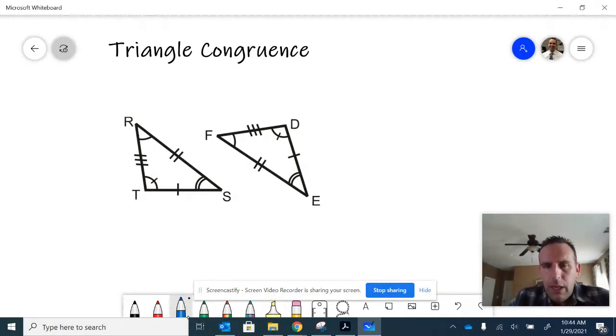So we have three congruent statements for angles. We can say that angle R is congruent to angle F. We can also state that angle S is congruent to angle E.